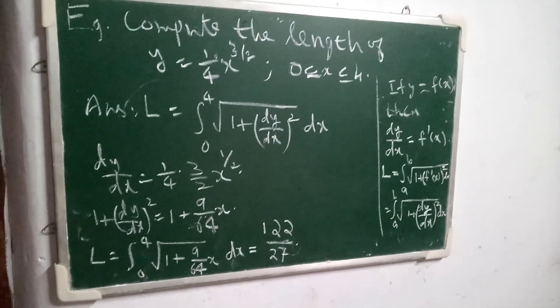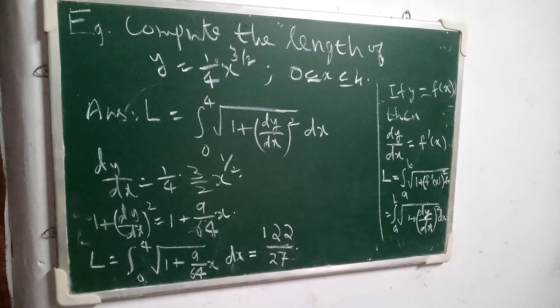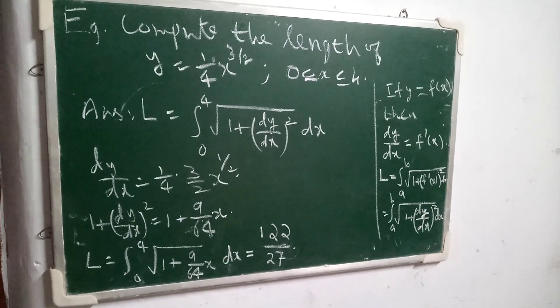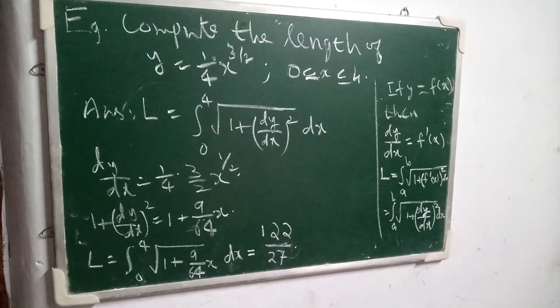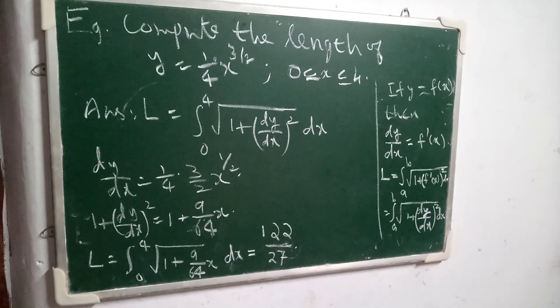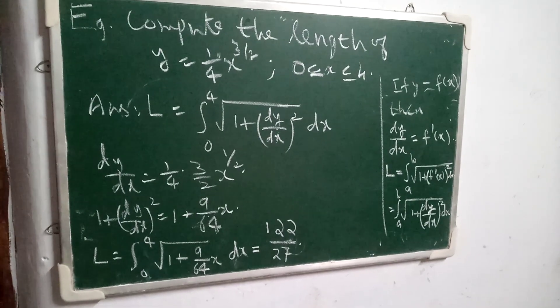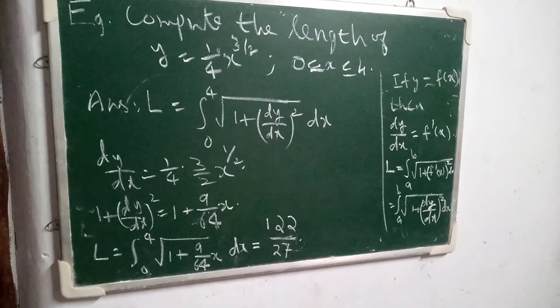And you may use substitution method. Put u is equal to 1 plus 9 by 64 x. Then du is equal to and so on. And finally, you will get the answer 122 divided by 27.